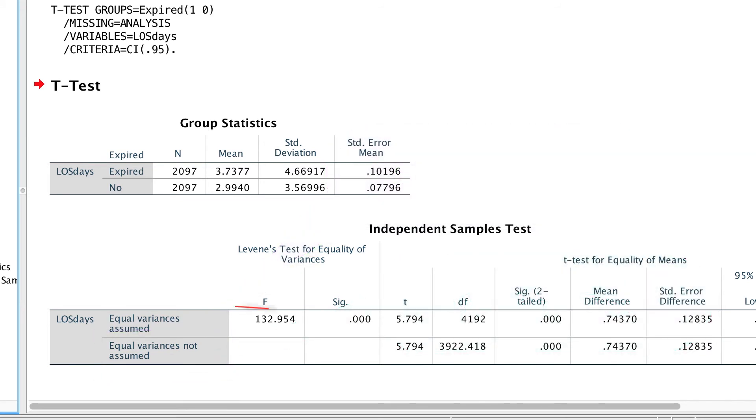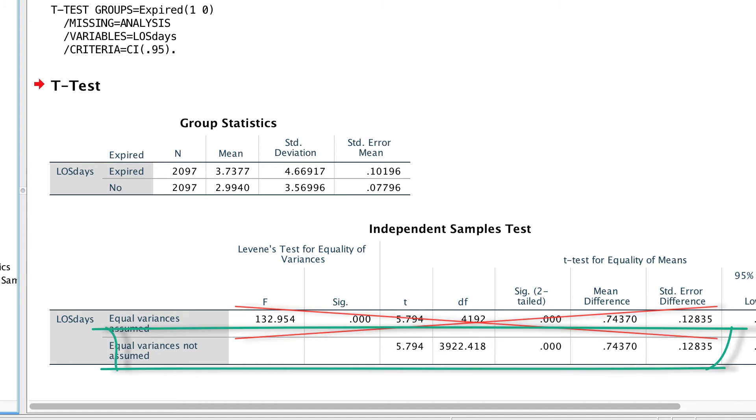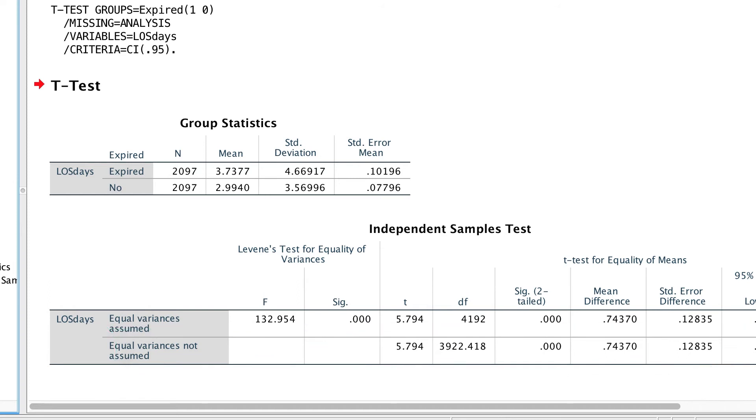So the best advice is to always ignore the top line and always report the bottom line anytime you do a t-test in SPSS. If all goes well, then the two outcomes will agree. But if you have problems with unequal sample sizes or unequal variances, Welch's t-test will always be more accurate.